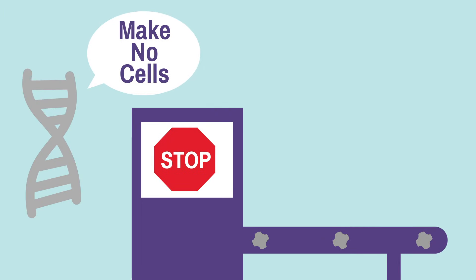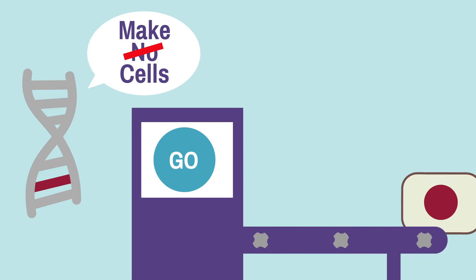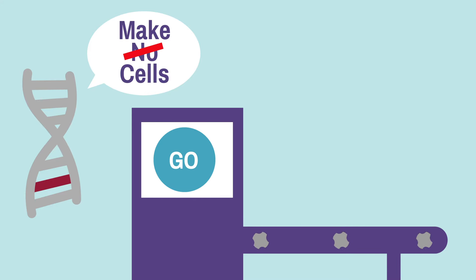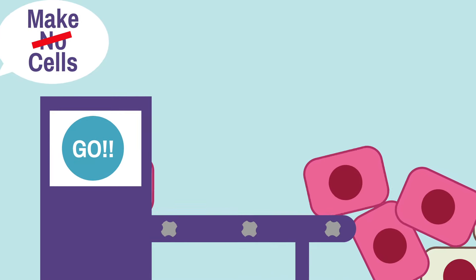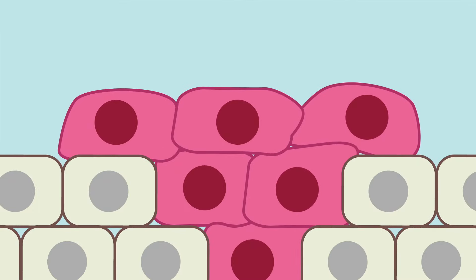However, some mutations change proteins that control cell growth and death. Over time, cells with these types of mutations may acquire more mutations and become cancer cells. Groups of cancer cells in one location are called a tumor. Often, tumor cells have many mutations that are not present in the DNA of a healthy cell.